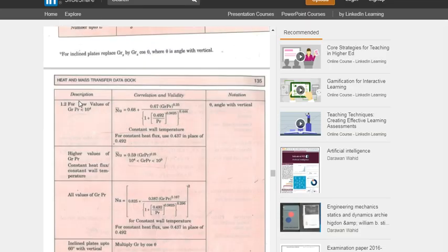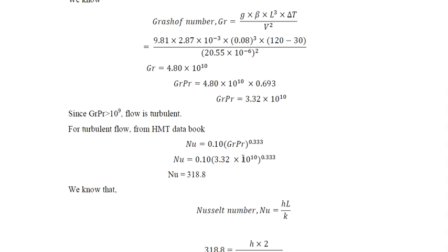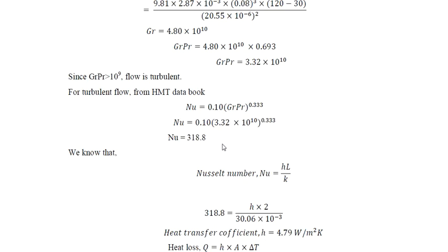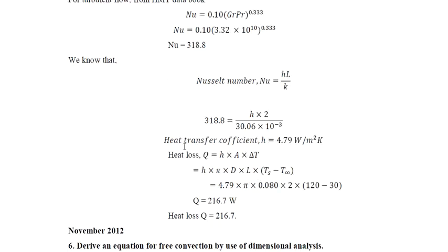For turbulent free convection (GrPr > 10⁹), from page 135 of the Kodandrama book, the Nusselt number correlation is: Nu = 0.10 (GrPr)^0.333. Substituting GrPr = 3.32 × 10¹⁰, we get Nu = 318.8. From Nu = h·L / k, the heat transfer coefficient h = Nu × k / L = 318.8 × 30.06 × 10⁻³ / 2 = 4.79 W/m²·K.